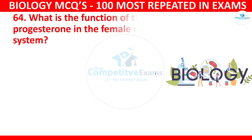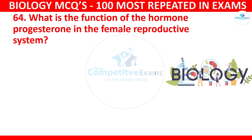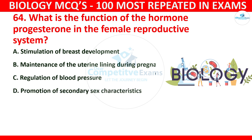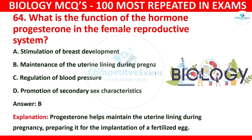Question number 64: What is the function of the hormone progesterone in the female reproductive system? The options are stimulation of breast development, maintenance of the uterine lining during pregnancy, regulation of blood pressure, or promotion of secondary sex characteristics. The correct answer is B: maintenance of the uterine lining during pregnancy. Progesterone helps to maintain the uterine lining during pregnancy, preparing it for the implantation of a fertilized egg.